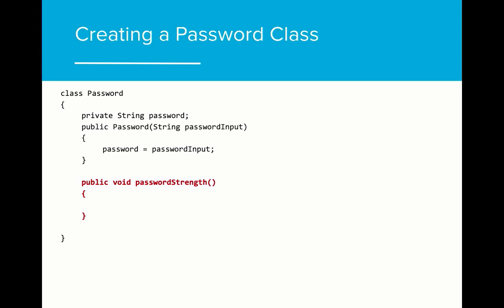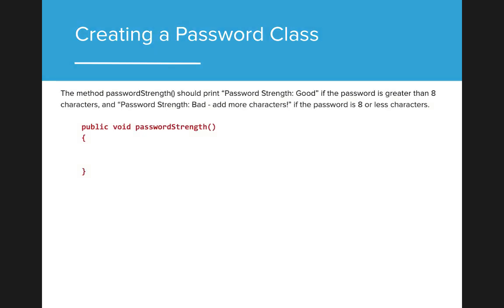In order to make this program more useful, let's add a method that tests the strength of the user's password. Let's call that method password strength. The implementation of password strength is as follows: if the password is greater than 8 characters, we will print password strength good. Otherwise, we will print password strength bad. Can you implement this based on what we've learned so far? Pause the video and try to solve this problem.